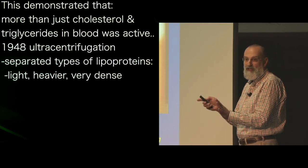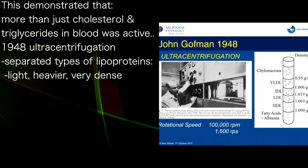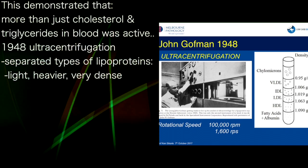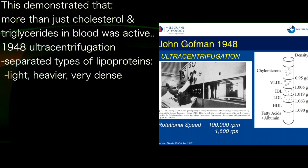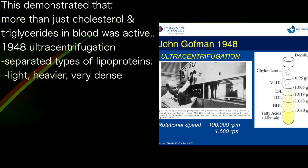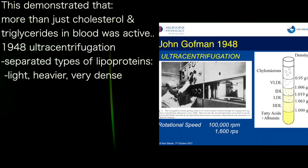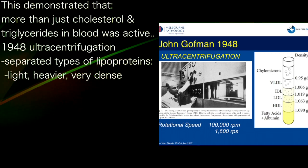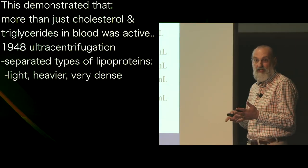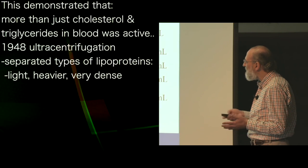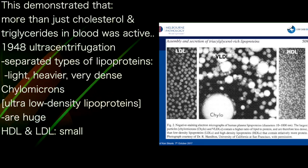John Goffman used the ultracentrifuge — originally invented by Americans to separate uranium isotopes for atomic bombs — for medicine instead. He used it to separate the particles that contain triglyceride and cholesterol, and found that some particles were very low density lipoproteins and some were very high density lipoproteins. Suddenly we had more than just cholesterol and triglyceride: we had distinct lipoproteins. We understood that chylomicrons were huge and that HDL and LDL were small.